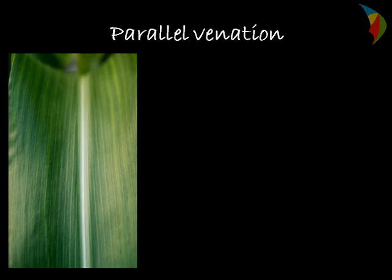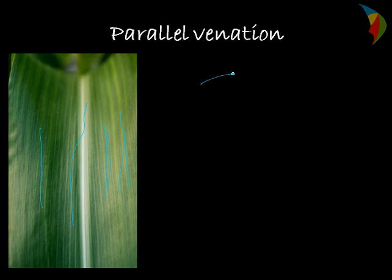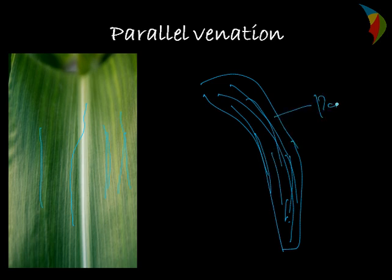The other type of venation is parallel venation. In parallel venation, you can see the mid-rib is there, and a lot of veins run parallel to the main veins — like in the case of sugarcane or maize. The main mid-rib is in the centre and many parallel veins run along it, forming a parallel venation.